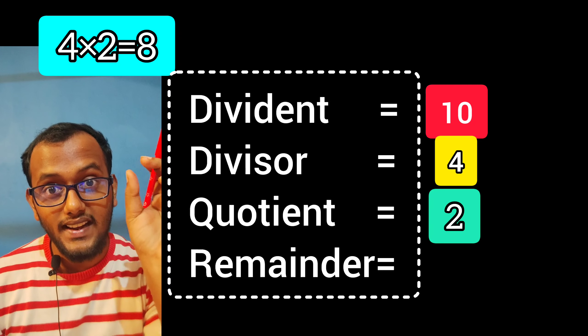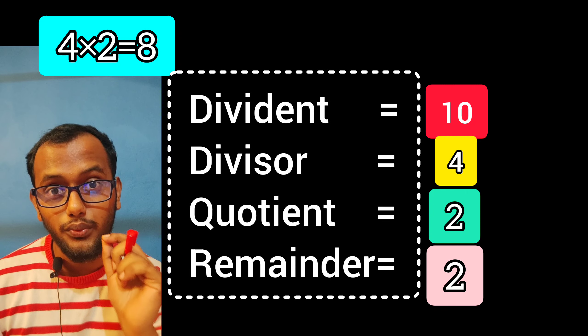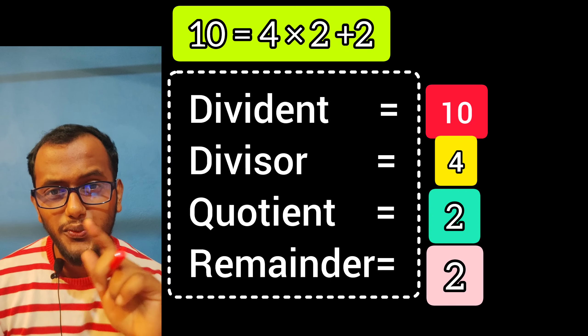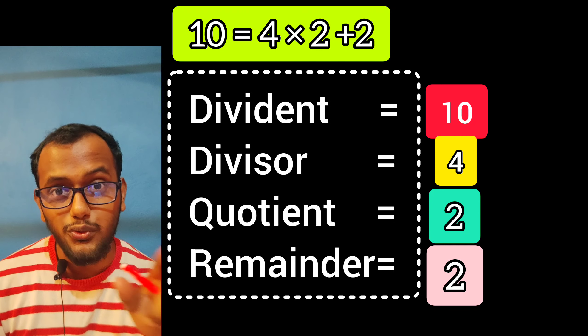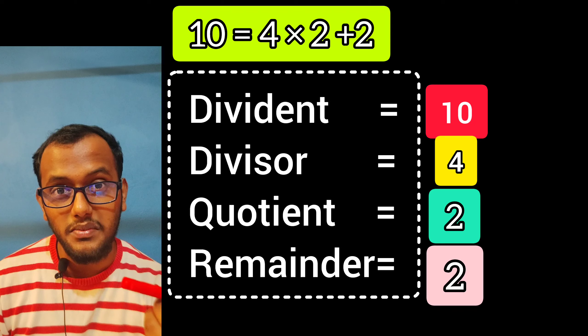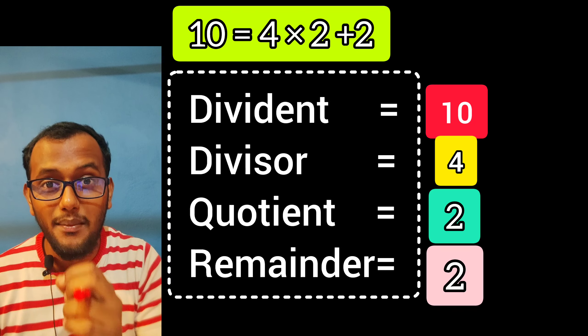When we divide 10 by 4, we get remainder 2. From this, we can write 10 = 4 × 2 + 2, which demonstrates dividend = divisor × quotient + remainder. This is the basic concept of Euclid's Division Lemma.